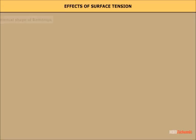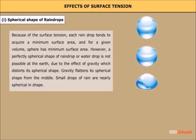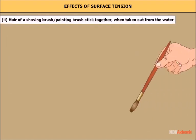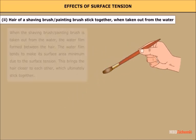Effects of surface tension — number one: the spherical shape of rain drops. Because of surface tension, each rain drop tends to acquire a minimum surface area. For a given volume, a sphere has the minimum surface area. However, a perfect spherical shape of a rain drop is not possible at Earth's surface due to the effect of gravity, which flattens its spherical shape from the middle. Small drops of rain are nearly spherical in shape.